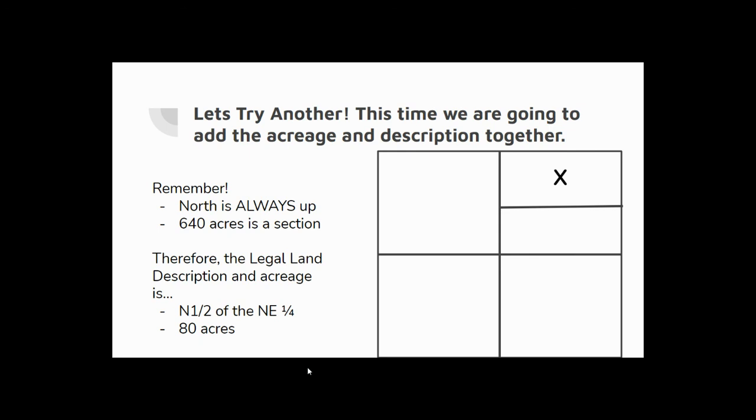So let's try another. This time we're going to add the acreage and description together. So again, our X has moved. So we know this whole outside box here is 640 acres. We know that north is always pointing up. And so we find that the legal land description, right? We're, again, dividing it into quarters. North is up. So this would be the north half. And we start from the inside, from the smallest number, from the smallest size out to the largest. So this, I've got to figure out what this box, right here where the X is, is of this whole box, right?